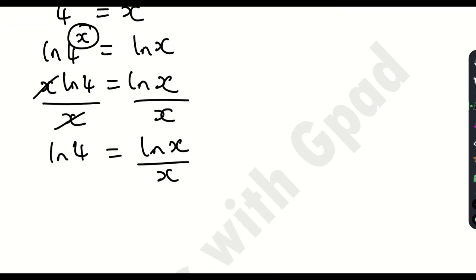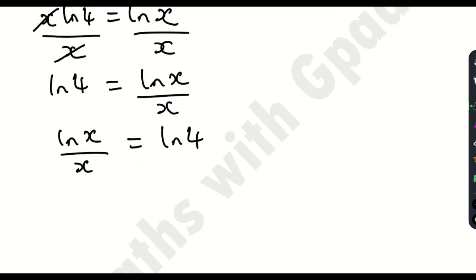Let me just rewrite this as ln x over x is equal to ln 4. Look at this x here. It's now time to introduce you to the Lambert W function.